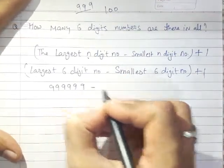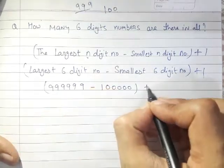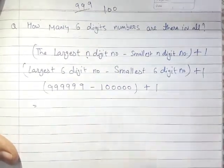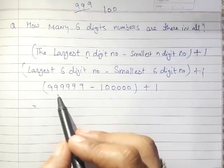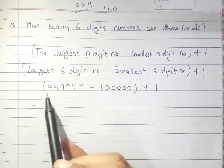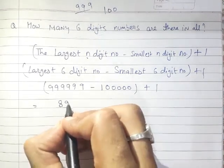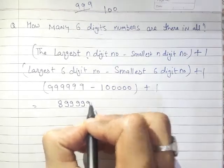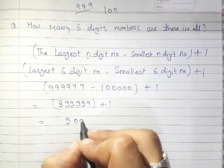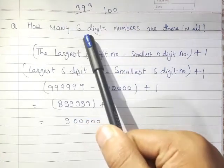So we calculate: 999999 minus 100000 plus one. Subtracting one lakh from nine lakh ninety-nine thousand nine hundred ninety-nine, and then adding one, we get nine lakh. Hence, there are nine lakh six-digit numbers in all.